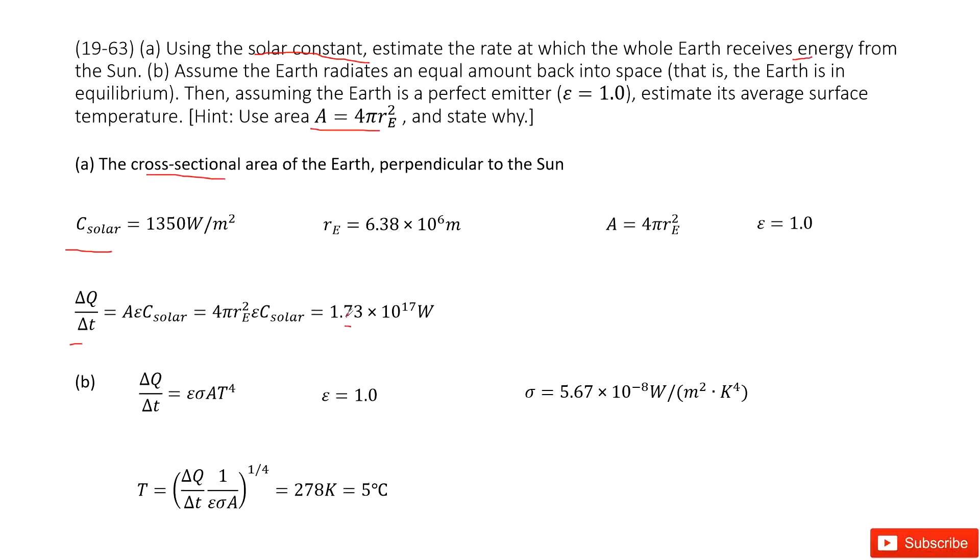The next one asks you to assume the Earth radiates an equal amount of energy back into space. We consider the Earth as a perfect emitter, so this epsilon is given as 1. We need to find its average surface temperature.